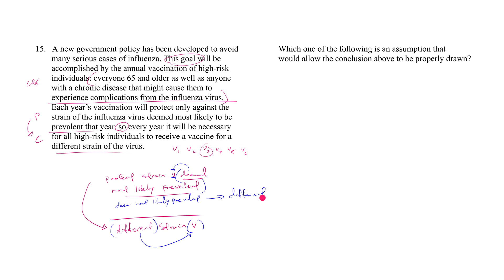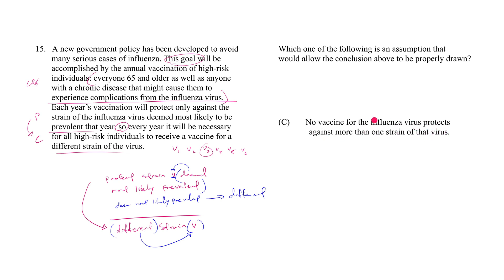Let's look at the answers. I want to start with answer choice C, which says 'no vaccine for the influenza virus protects against more than one strain of virus.' First, let's figure out what C is actually saying: no vaccine protects against more than one strain, meaning each vaccine protects against exactly one strain. Now, is this sufficient — if we know vaccinations protect against exactly one strain, does our argument flow? No, it doesn't.